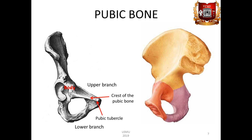The anterior part of the upper branch passes into the lower branch, on the medial surface of which there is a symphysial surface, facies symphysialis. It is involved in the formation of the pubic symphysis. On the inner surface of the pelvic bone, at the site of fusion of the iliac and pubic bones, there is an iliopubic eminence, eminentia iliopubica.